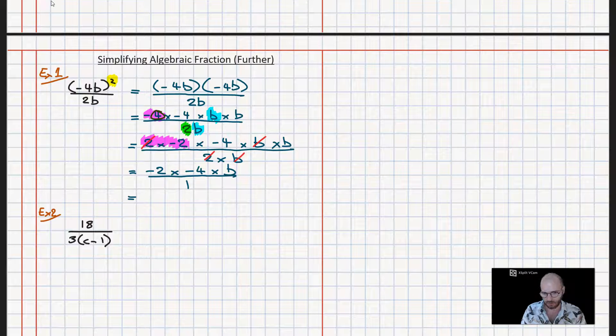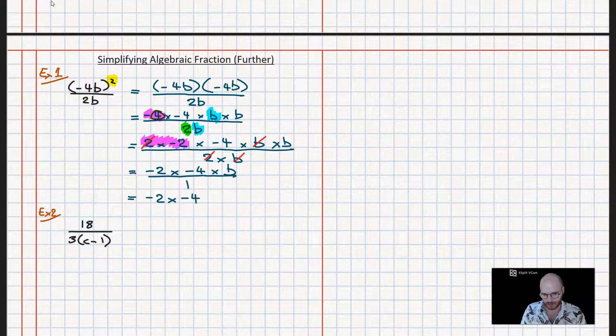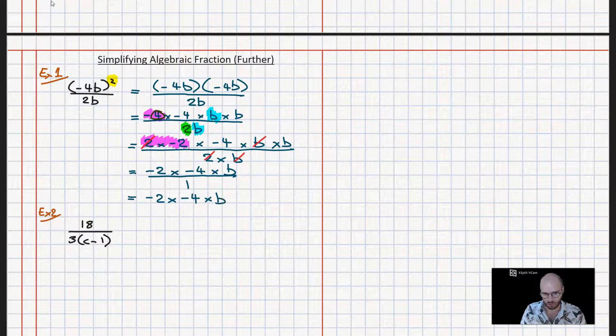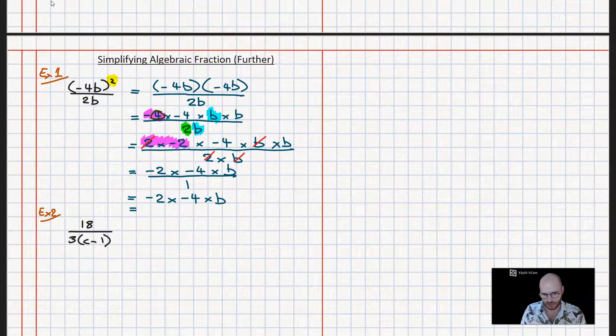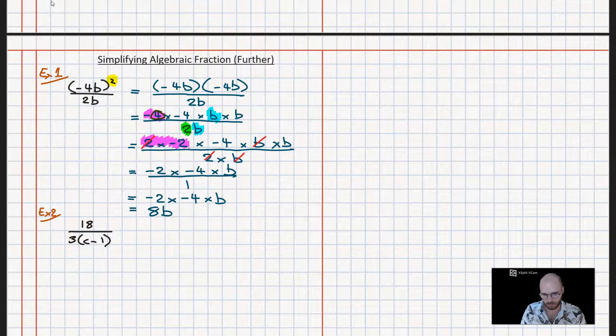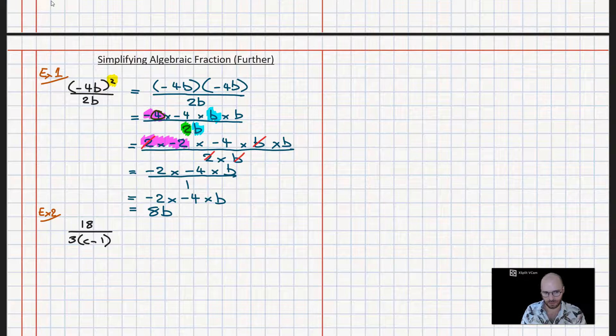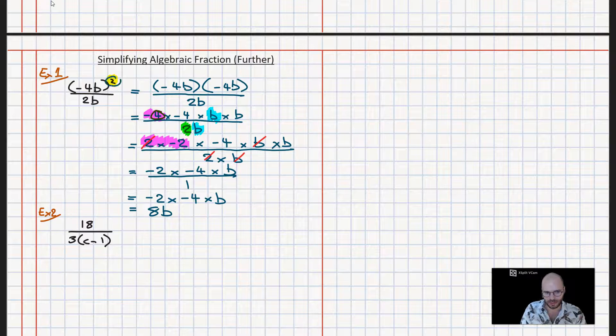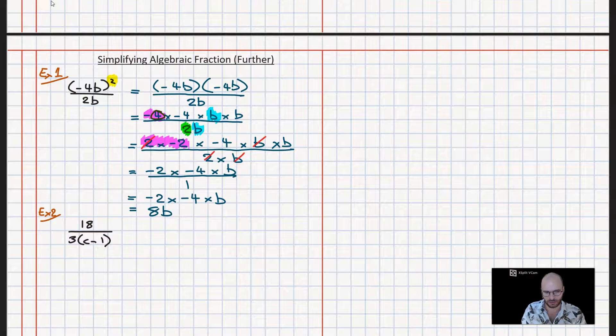All we need to do is evaluate the numerator. So it's minus 2 times minus 4 times b. That simplifies out to be, well, 2 times 4 is 8, and it's double negative so it becomes positive 8, so 8b. So that's how we simplify the first one.